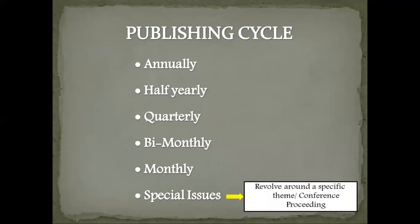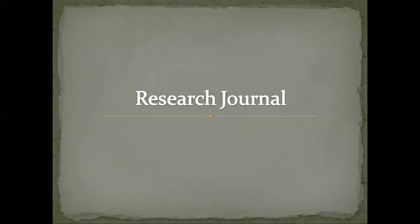If the publication cycle is monthly, there will be 12 issues per year. Sometimes a journal will publish special issues, and in such cases the issues will revolve only around a specific theme or publish work from any conference or proceedings. These are the basic details and information related to research journal articles.